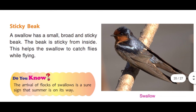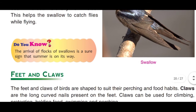Sticky beak: A swallow has a small, broad, and sticky beak — sticky from the inside. The stickiness helps the swallow to catch flies while flying. Inka beak andar se chipchipa hota hai, bahar se nahi, jo unhe insects pakadne mein madad karta hai. Did you know? The arrival of flocks of swallows is a sure sign that summer is on its way.